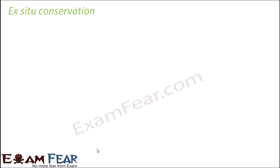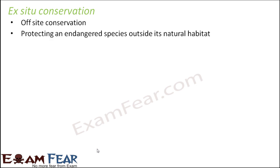The second type is ex-situ conservation, or off-site conservation. Here we protect an endangered species outside its natural habitat. We take the species out from their natural habitat, but wherever we keep them, we ensure they get proper food, proper shelter, and proper care so they can survive. We create an artificially created environment where the species feel like they are in their natural habitat.